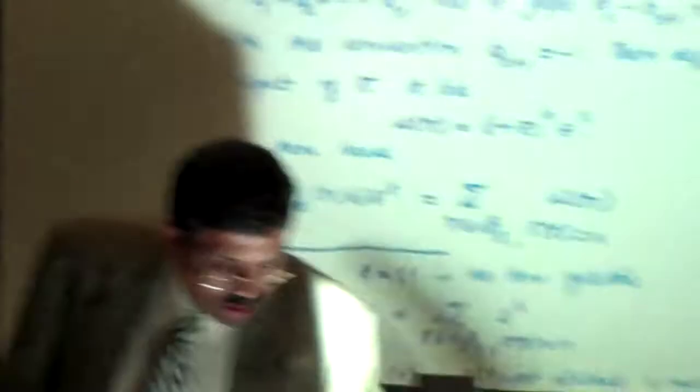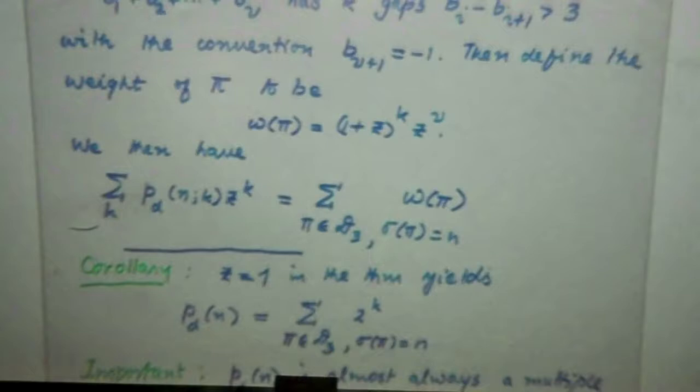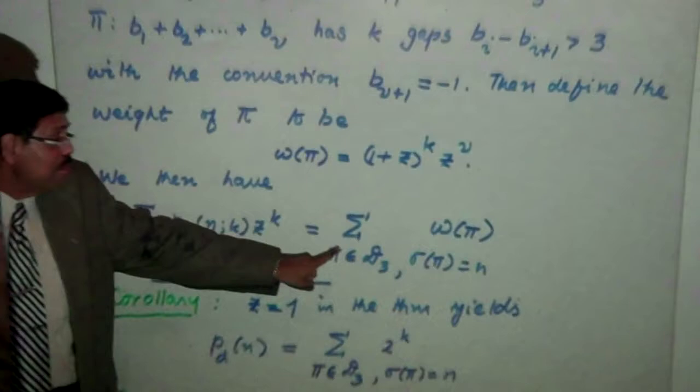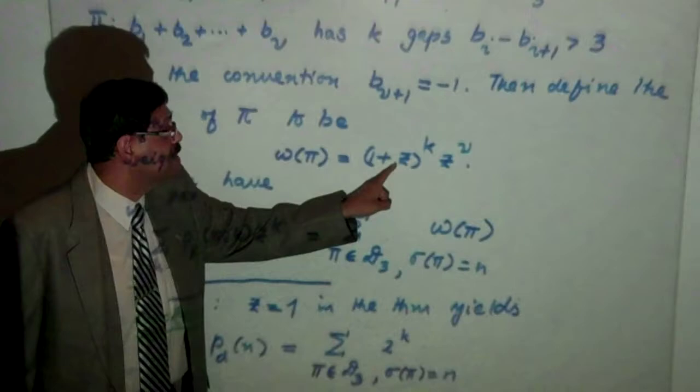So the theorem is: if I count partitions into distinct parts according to the number of parts with weight z, that is the same as going to the subset of partitions and counting it with weight 1 plus z to the power k, times z to the number of parts.